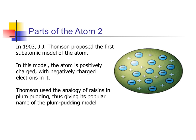One of the analogies — and I don't know how historically accurate it is — is that J.J. Thomson was said to have been eating dessert after supper, eating his plum pudding, which is like a rice-based pudding that had raisins or dehydrated plums in it. The raisins or plums were very randomly spread throughout, and the pudding was the positive. The raisins were the electrons, just randomly spread throughout the atom. And that's why it gets its name: the Plum Pudding Model.